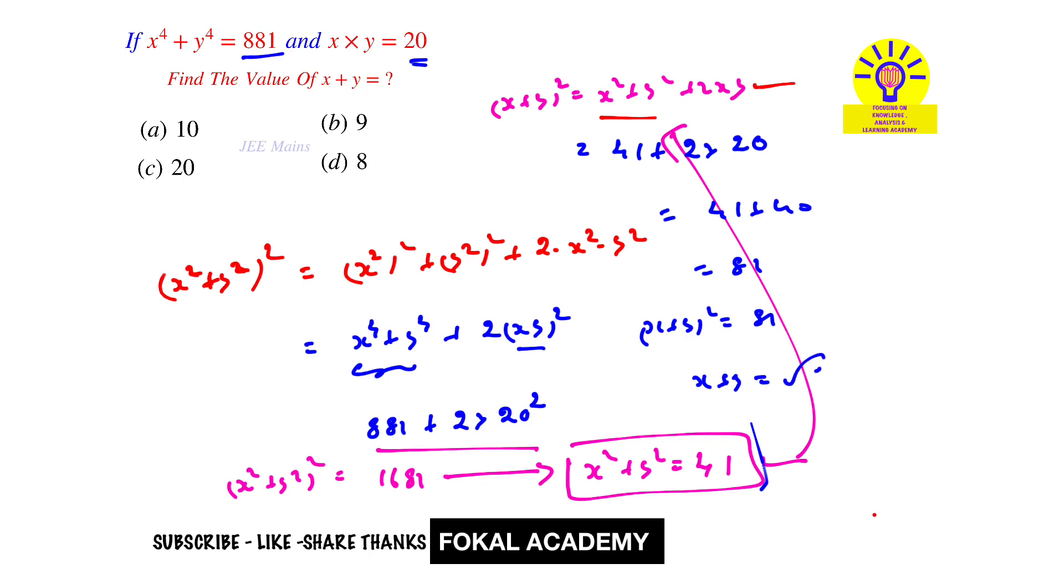The sum of the two terms is 9. From the options, option B is the correct option. This is the process of simplification. Thanks for watching. Please subscribe, like, and share. Thanks.